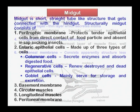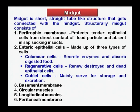Coming to the midgut or the middle part of the alimentary canal, it is a straight tube-like structure connected with the hindgut. The midgut consists of a peritrophic membrane and epithelial cells. The peritrophic membrane is an important membrane which protects tender epithelial cells from direct contact with food particles, and it is absent in sap-sucking insects or insects which feed on plant cell sap. It is absent in plant bugs, though there are few exceptions.